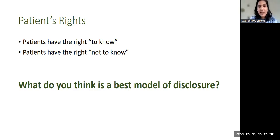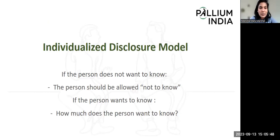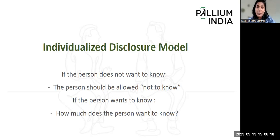I think all of you are on the right track. There is a model commonly used in palliative care: the individualized disclosure model. If the person wants to know, the person should be allowed. If the person does not want to know, the person should be allowed not to know. If the person wants to know, an important question is: how much does the person want to know? This model focuses on tailor-made disclosure — each person has different preferences and different ways of dealing with things. It depends on the patient which way they need the information disclosed.